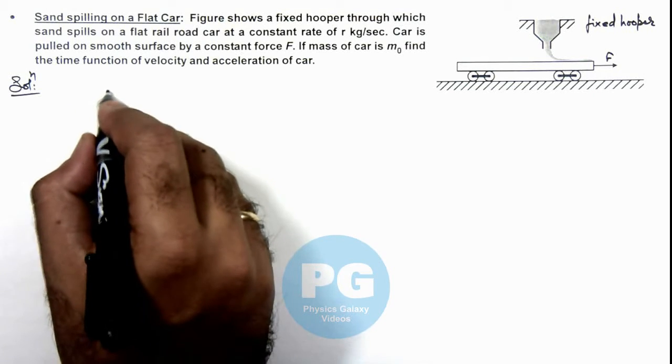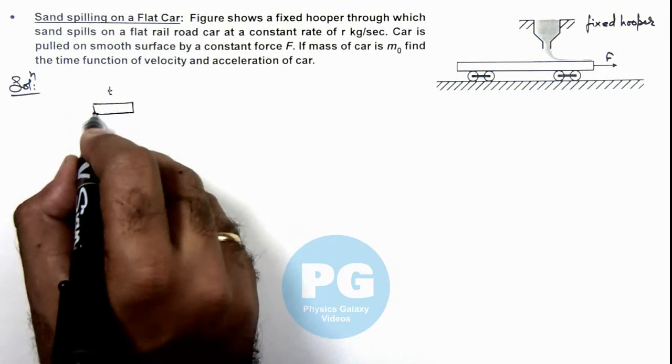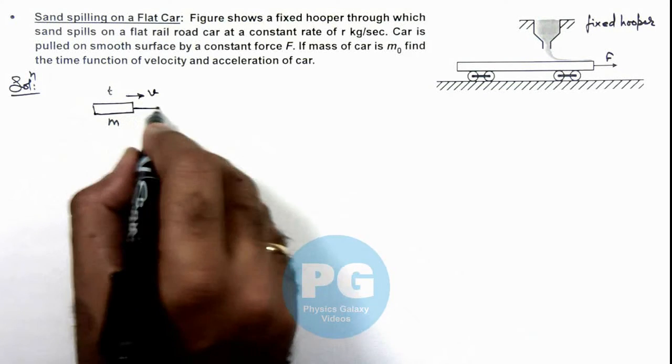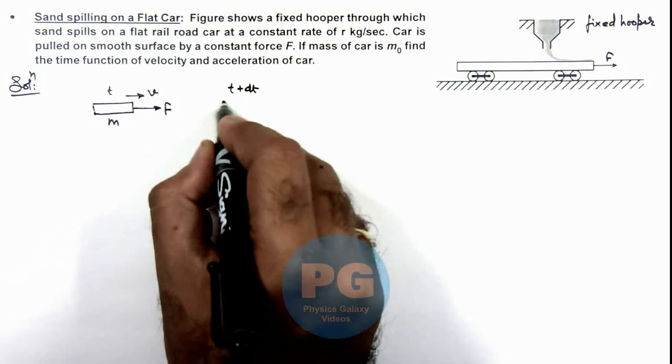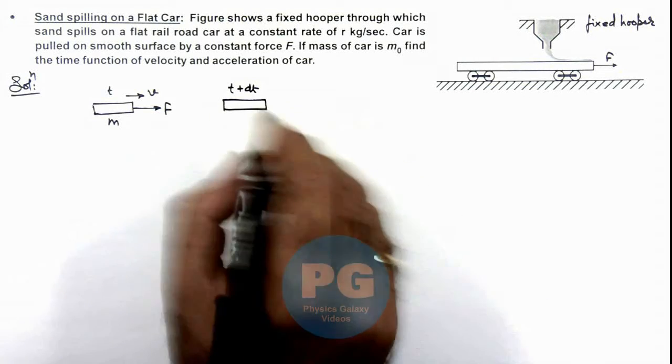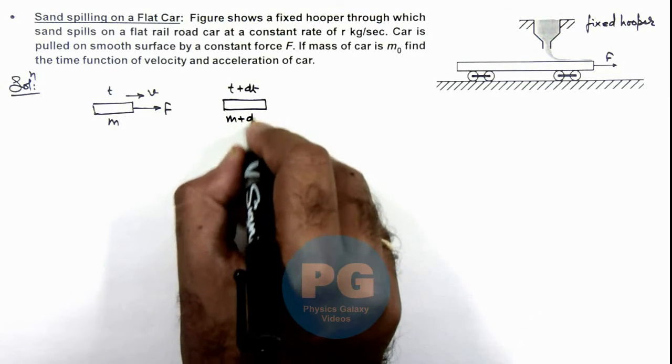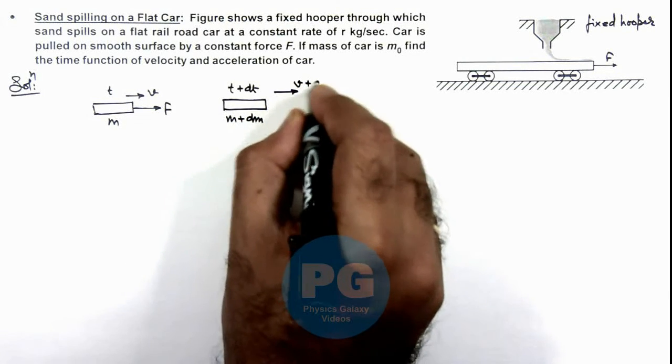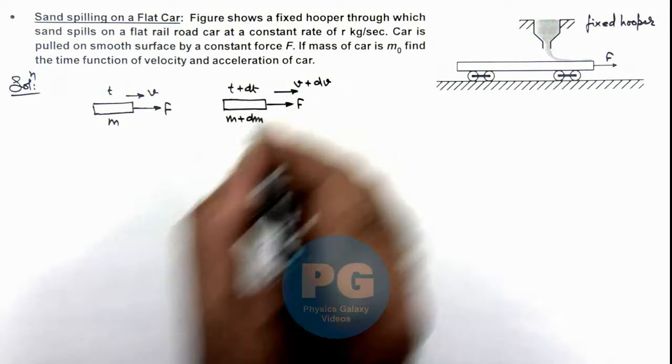Say at any time t, the mass of this system is m, which is moving at a velocity v and being pulled with a force F. And at time t plus dt, the mass of this system changes to m plus dm, and its velocity increases to v plus dv due to the applied force F.